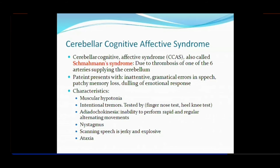One more important thing is adiadochokinesia. The neocerebellum, as you know, is related to the digits, and the intermediate zone also involves digits. What happens is inability to perform rapid and regular alternating movements. The person will make mistakes while doing repeated work — inability to perform rapid and regular alternating movements because learning abilities are reduced.